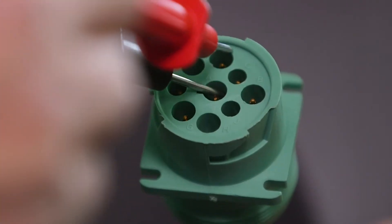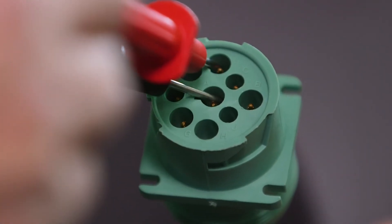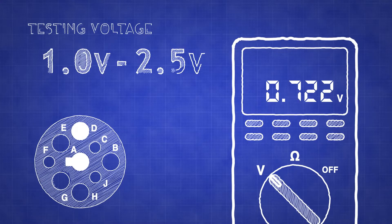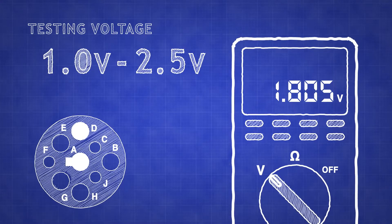Keeping the negative probe in pin A, move the positive probe to pin D. The reading should now read between 1.0 volts and 2.5 volts.